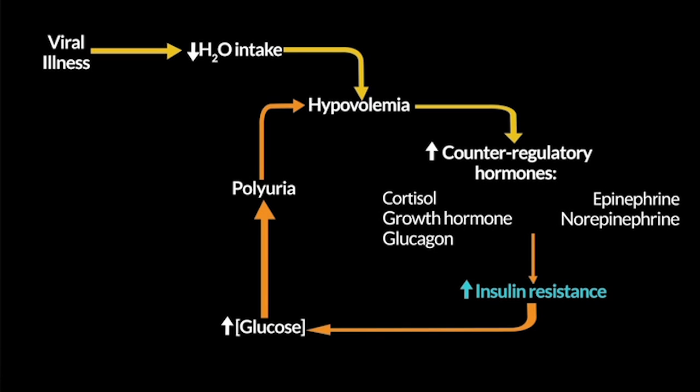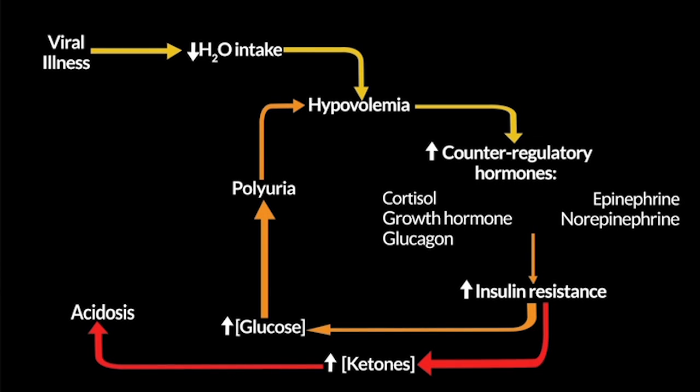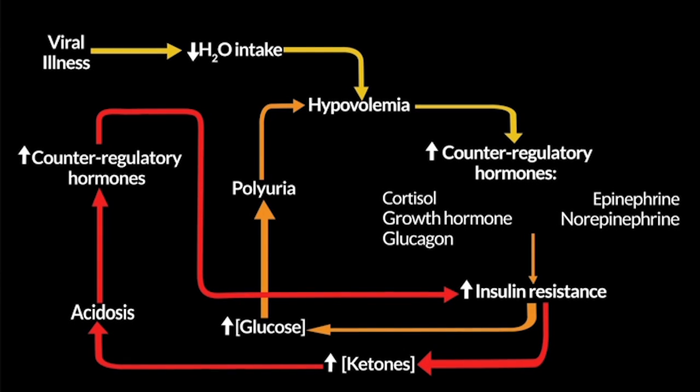That insulin resistance becomes significant enough that instead of just increasing the glucose concentration, they begin to have significant ketone production. Ketones are a weak acid, but in significant concentrations they produce a significant acidosis that triggers even more counterregulation. Once you get into this cycle, there is no way out without insulin. This is a spiral that, untreated with insulin, will result in death — there are no case reports of somebody getting diabetic ketoacidosis and spontaneously surviving. The problem with DKA is insulin deficiency, and the cure for DKA is insulin.